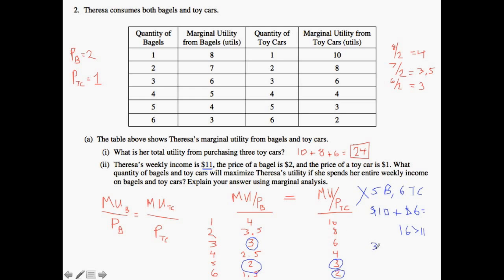Therefore we need to check the other point in which MUBPB equals MUPTC which is at 3. So if we do 3 bagels and 5 toy cars we know that Teresa would spend 3 times 2 which is $6 plus $5 which is a perfect $11 and therefore the optimal is going to be where Teresa purchases 3 bagels and 5 toy cars.